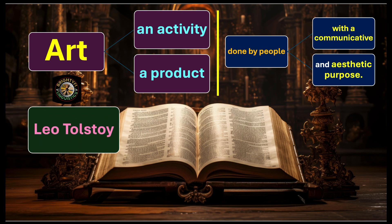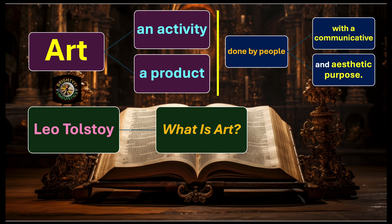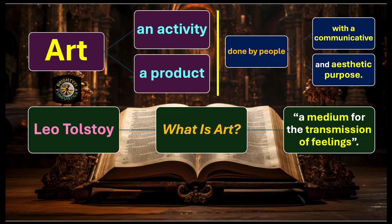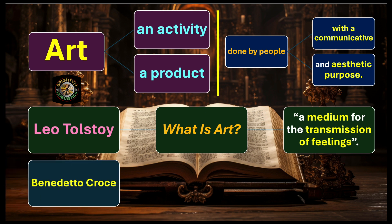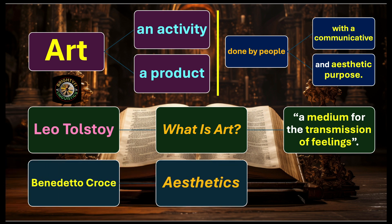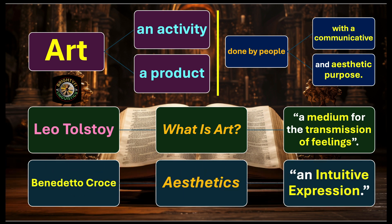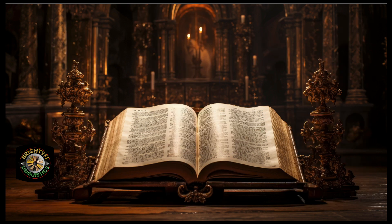Now let's define what art is according to great thinkers and writers. Leo Tolstoy, in his work 'What is Art?', defined art as a medium for the transmission of feelings — meaning art is something that helps you express your feelings, emotions, and desires. Benedetto Croce, in his famous work 'Aesthetics', explains art is an intuitive expression — one which comes out naturally and spontaneously. So art is related to feelings, emotions, desires, and intuition, and has nothing to do with logical interpretation.